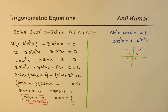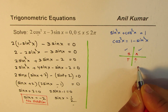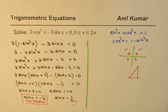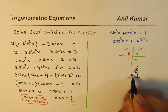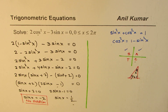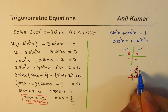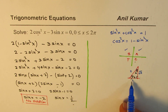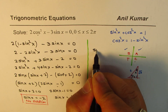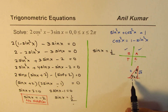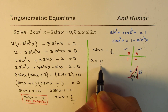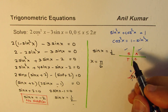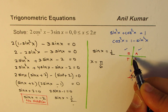sinx equals 1/2 reminds us of a special triangle, which is the 30-60-90 triangle with angles π/6, π/3, and π/2. The sides of this triangle are 1, √3, and 2. We are looking for sine, which is opposite over hypotenuse. So sinx = 1/2 corresponds to the angle π/6, giving us x equals π/6.